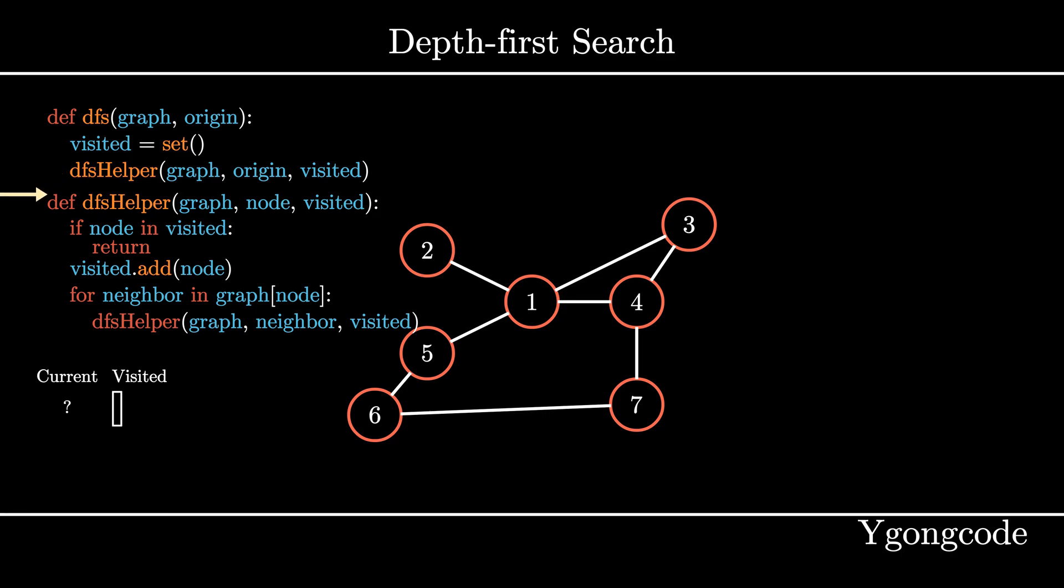First, we make a call to the helper function with our starting node. Since each function call is stored in the call stack until it finishes executing, we will store this call into our call stack. The helper function then checks if our node is in the set. It is not, so we add the node to our visited set.